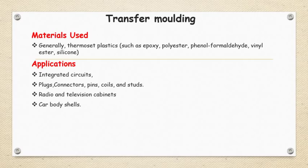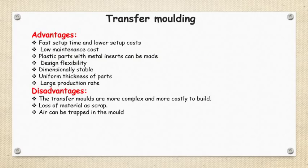Materials used for transfer molding are thermosetting plastics, generally epoxy, polyester, phenol formaldehyde, vinyl ester, silicone, etc. Applications include complex geometries, integrated circuits, plugs, connector pins, coils, studs, radio and television cabinets, and car body panels.